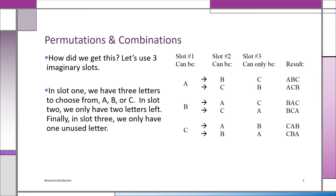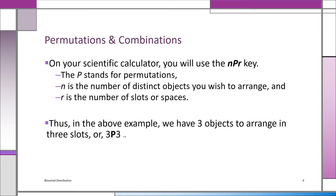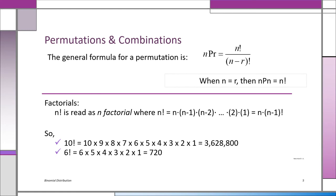That's how we know that three permutation three ends up being three factorial — three times two times one. If you look at your scientific calculator, you'll see an NPR key. P stands for permutations. N is the number of distinct objects, and R is the number of slots or spaces. The general formula for permutation is NPR equals N factorial divided by N minus R factorial.